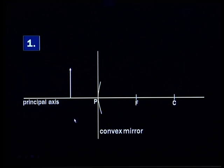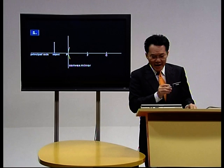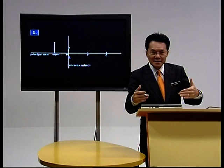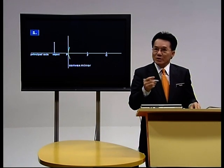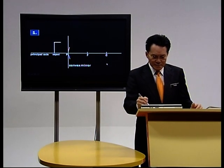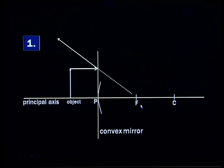Now I will place my object in front of the mirror. We have to construct and draw the ray diagrams — draw the rays going through the mirror, and after that we should get the image. The first ray that we must draw is parallel to the principal axis, and then it is reflected as if it is coming from the focal point F. That is ray number one.